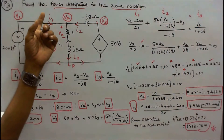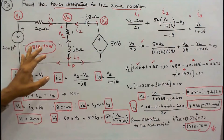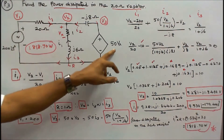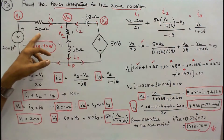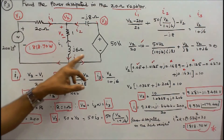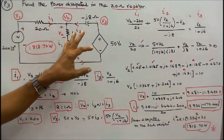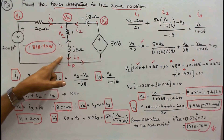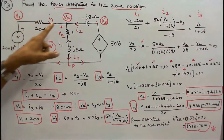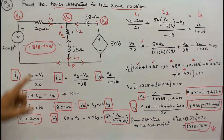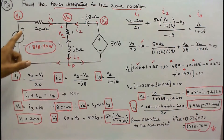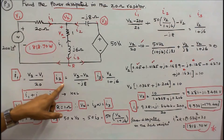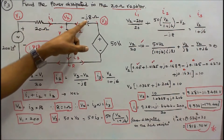Problem number 3: find the power dissipated in the 20 ohm resistor. The circuit consists of one independent voltage source, one dependent voltage source, two resistors of 20 ohm and 1 ohm, one inductor j6 ohm, and one capacitor minus j8 ohm, all connected in series. There are three nodes labeled V1, V2, and V3, with currents I1, I2, and I3.